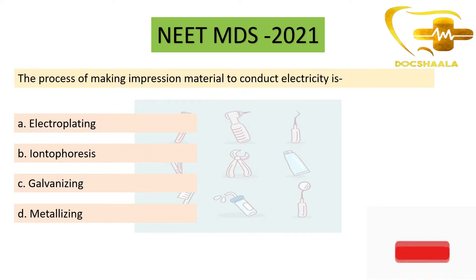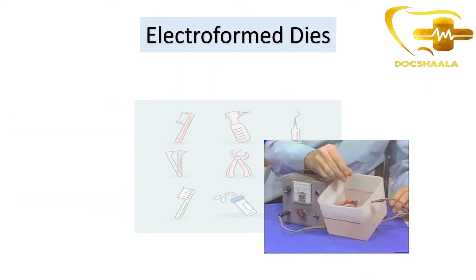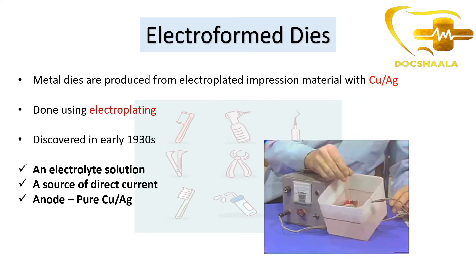Let us see how we make impression material conduct electricity and what electroform dies means. Metal dies are produced from electroplated impression material with copper or silver, and these are known as electroform dies. They are made using the technique of electroplating, which was discovered in the early 1930s.